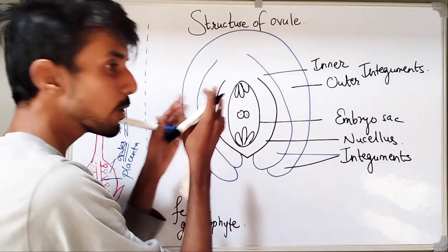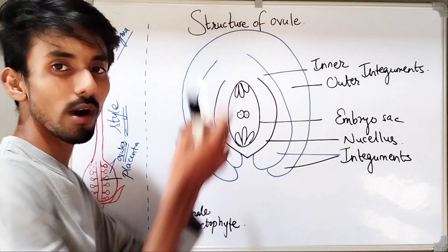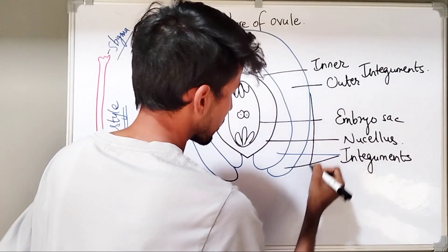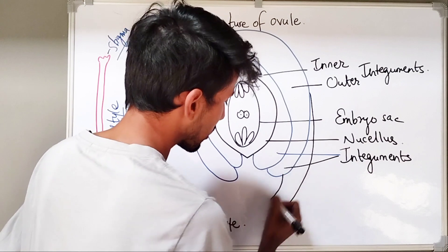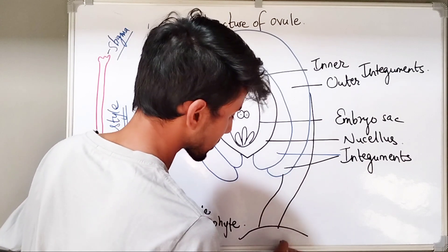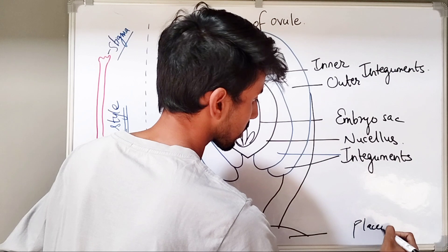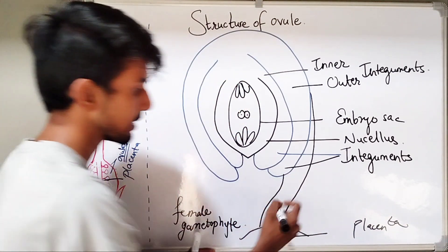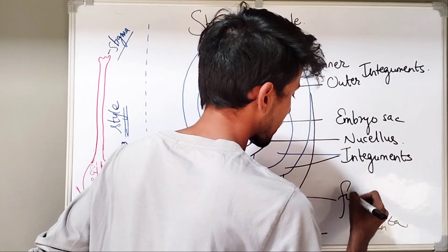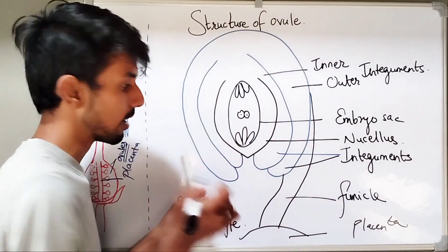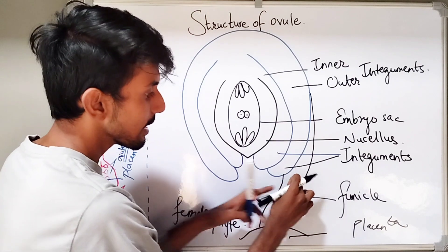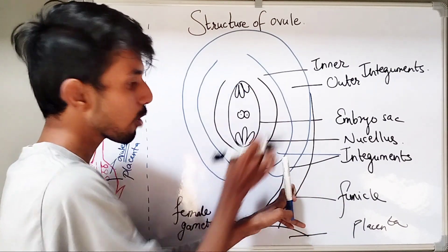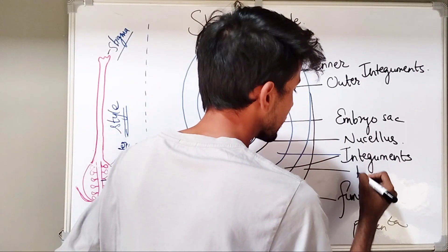The ovule is connected to the placenta. For that, we will require a stalk-like structure. This is the stalk that connects the ovule to the placenta — this is the underlying placenta. The stalk-like structure that connects the ovule to the placenta is called as the funicle. And the region of attachment of the funicle with the ovule is called as the hilum.